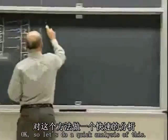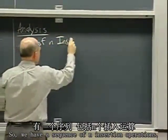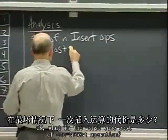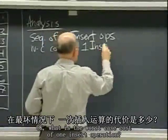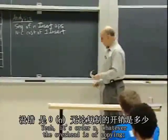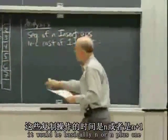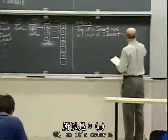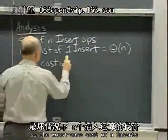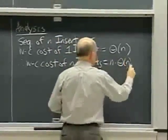So let's do a quick analysis. We have a sequence of n insertion operations. What is the worst case cost of one insert operation? It's order n — whatever the overhead is of copying. If we counted it as one, it would be basically n or n plus one because we've got to copy all those. So it's order n. Therefore if I have n of those, the worst case cost of n inserts is n times order n, which is order n squared.